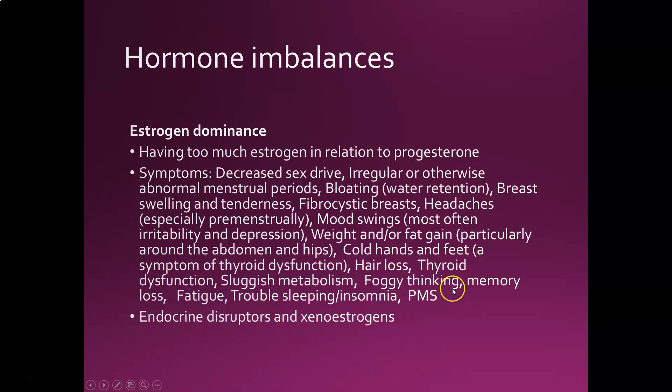What causes estrogen dominance in our society is really endocrine disruptors and xenoestrogens — chemical molecules added to personal care products, cleaning products, and plasticizers. BPA, for example, is commonly found in plastic bottles and it mimics estrogen. It can fit into estrogen receptors and have the same effects as estrogen; your body reads it as estrogen. This is definitely a problem and can affect fertility.